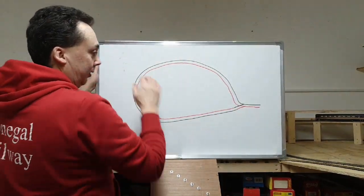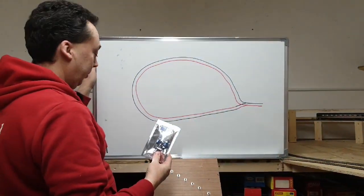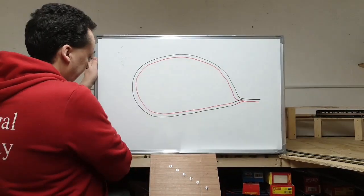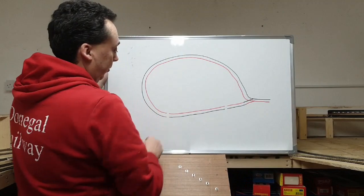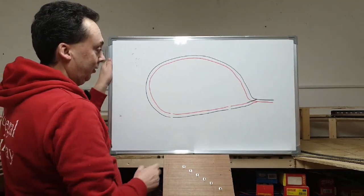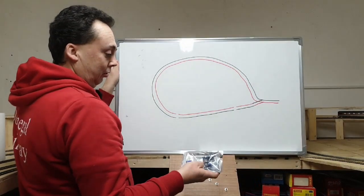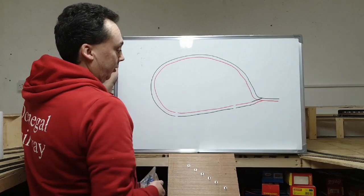So simply with the DCC auto-reverser, simple to fit, you supply a track feed to this and then you make an isolating section with some plastic fish plates. So this section is isolated. You take power supply into your auto-reverser and then two wires from this onto the track.